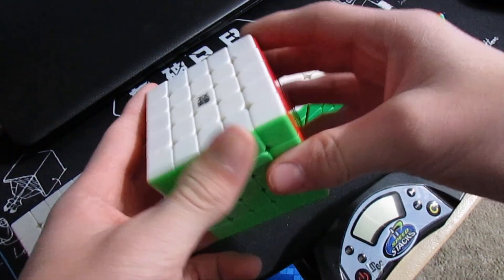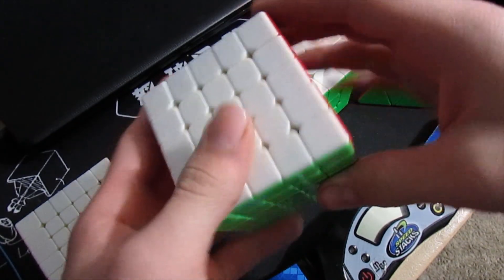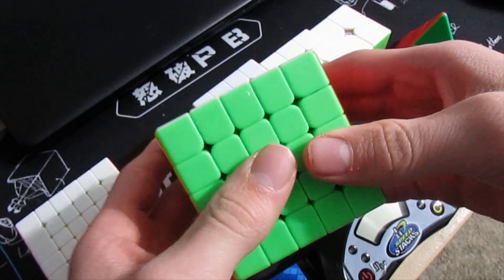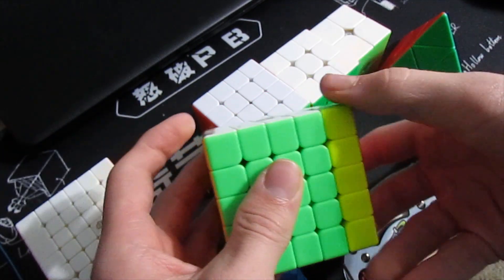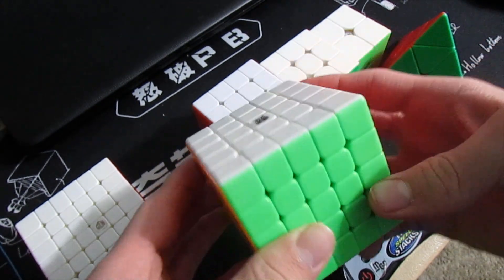Next, 5x5. I'm using my Moyu Aochuang M 5x5 and hoping for a sub-130 average and sub-125 single.